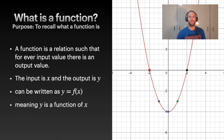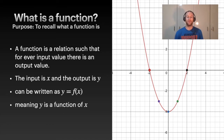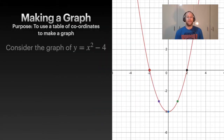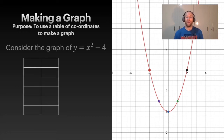That means in words we say 'y is a function of x.' To make a graph, consider this example on the right: y = x² - 4. One way to graph this is by using a table of coordinates.